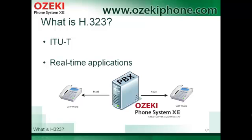What is H323? The H323 protocol is developed by the International Telecommunication Union. It is a standardization that is created for real-time applications. A real-time application can be, for example, a VoIP call that is demonstrated in the picture. A VoIP server that can be Azaki Phone System Axie makes VoIP phones possible to communicate with each other.